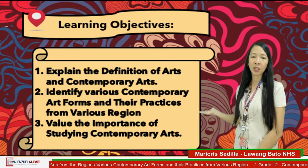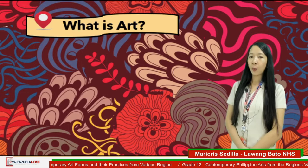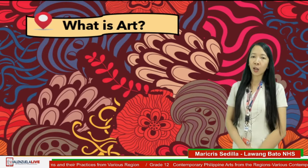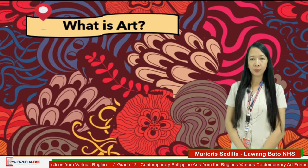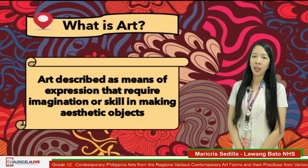To start, we will define the previous definition of arts from when you were in junior high school. What is the definition of arts from junior high school? Kindly use the comment section to give your answers. Art is described as a means of expression that requires imagination or skills in making aesthetic objects.